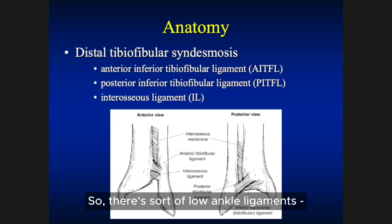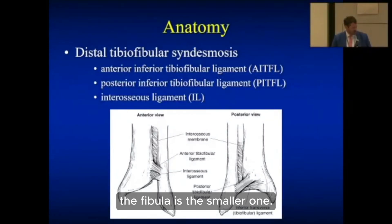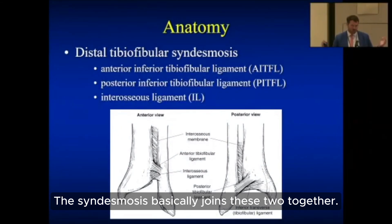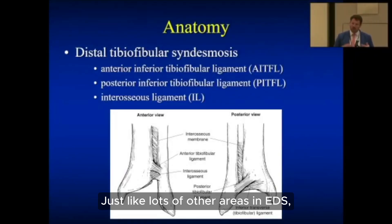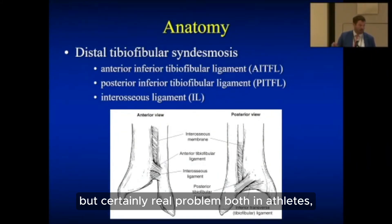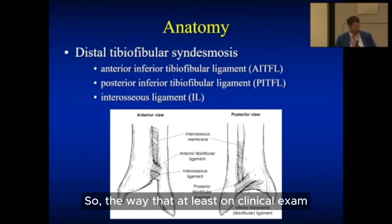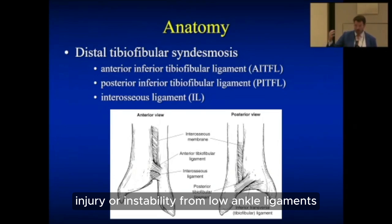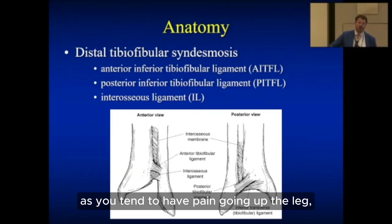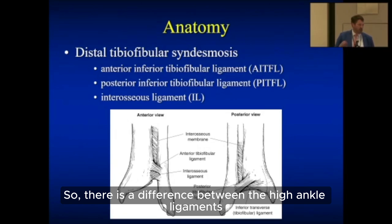There are low ankle ligaments — the ATFL and CFL — and then there are high ankle ligaments. The two bones of the lower leg, the tibia and fibula, are connected by something called the syndesmosis, which joins them together and allows them to move. Just like in other areas in EDS, you can injure your syndesmosis. Syndesmotic instability is a less common but certainly real problem. Clinically, you differentiate a high ankle injury by pain going up the leg, pain when you squeeze the bones, and pain when you try to move them apart from each other.